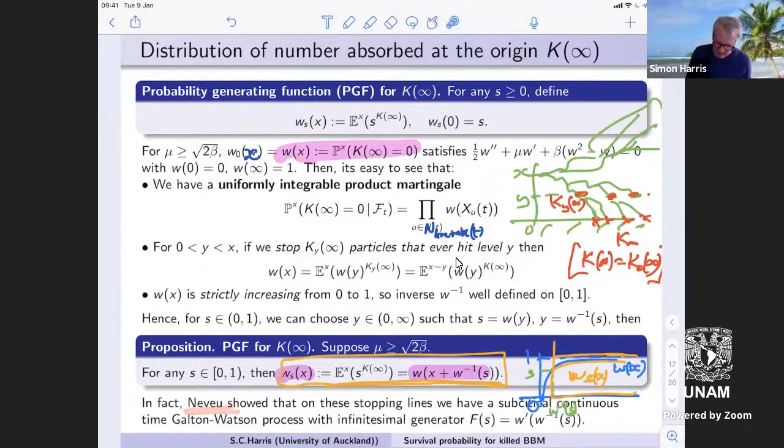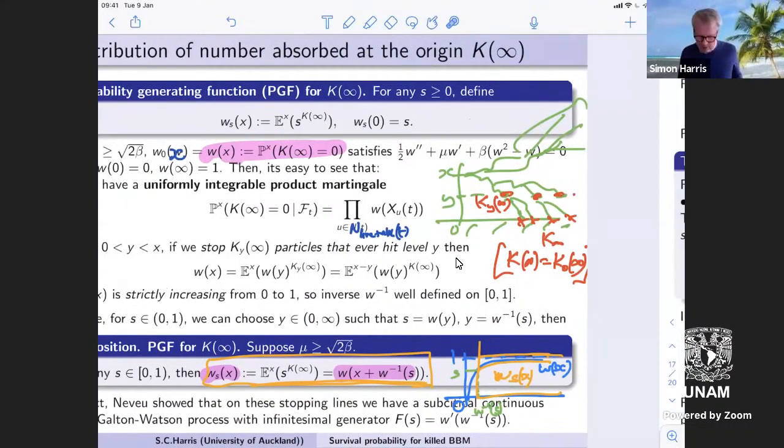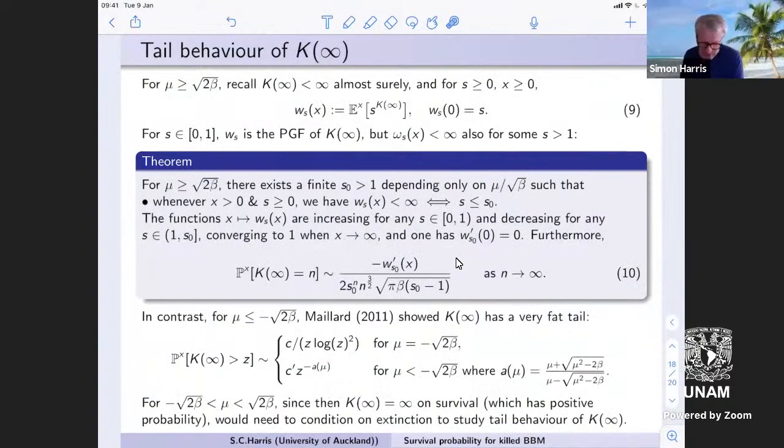You might think that we have to do more work, but it turns out that this one solution is all you need to have, that's all you need to get all of the other w_s's. So the PGF is entirely encapsulated in shifts of the w function, of the probability that nobody reached the origin. So again, it was a really nice result. And in fact, this is very closely related to again, these stopping lines. Neveu showed that essentially, if you take BBM on these stopping lines, BBM with drift on these stopping lines, then you get a continuous time Galton-Watson process which is subcritical, and it's got a certain infinitesimal generator which is related to the w of x.